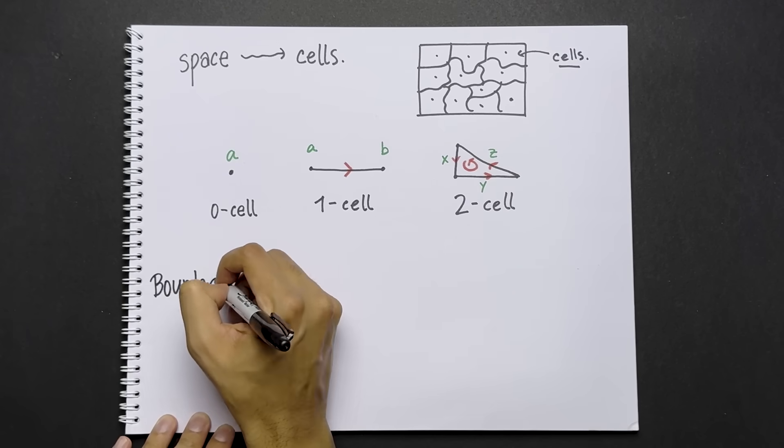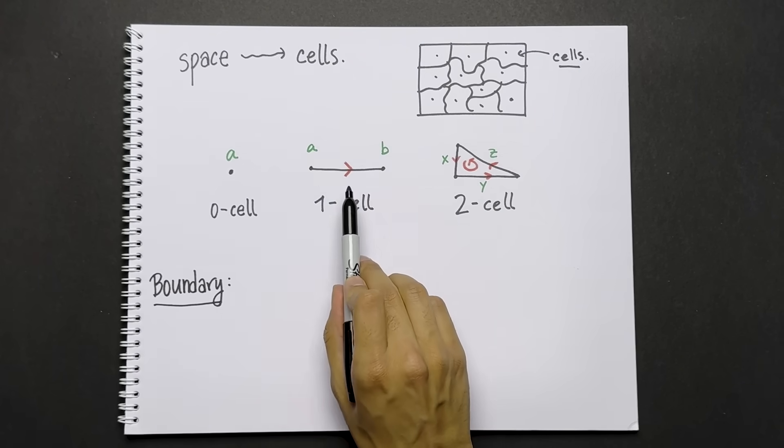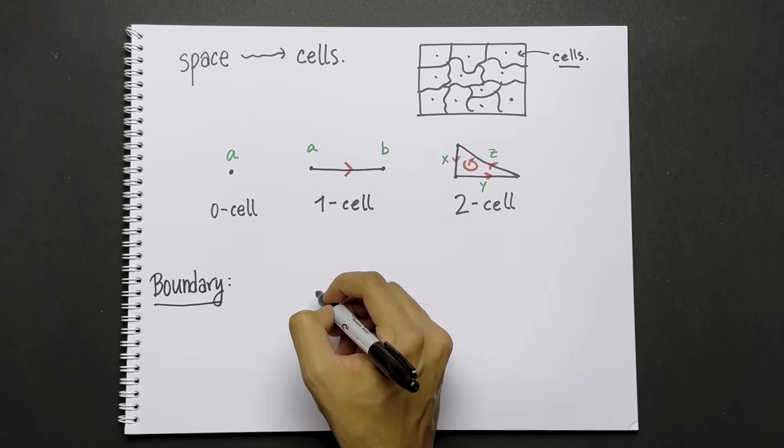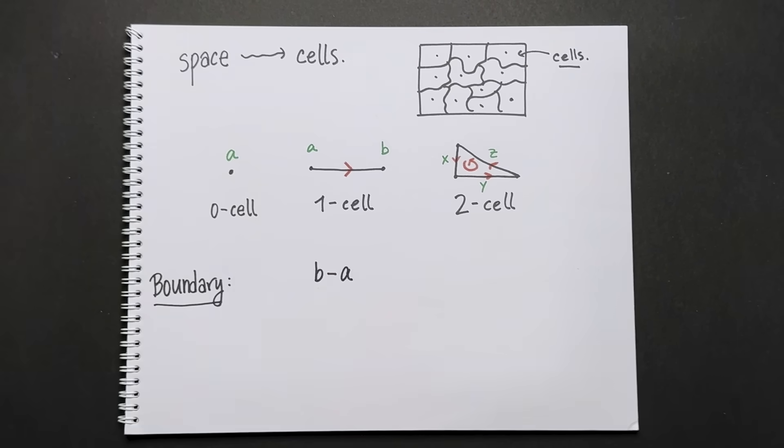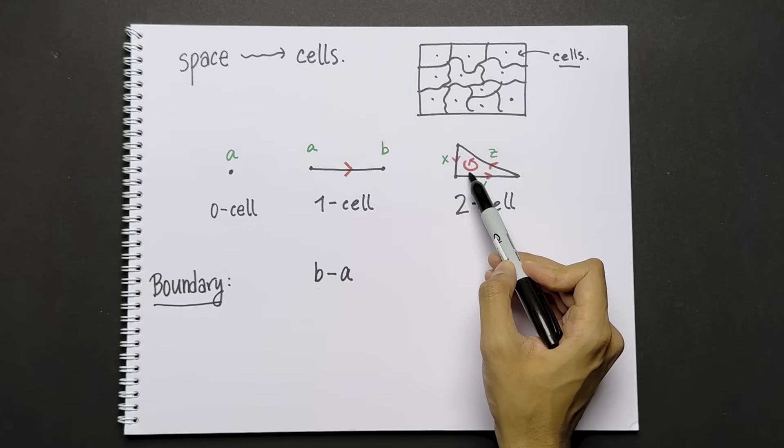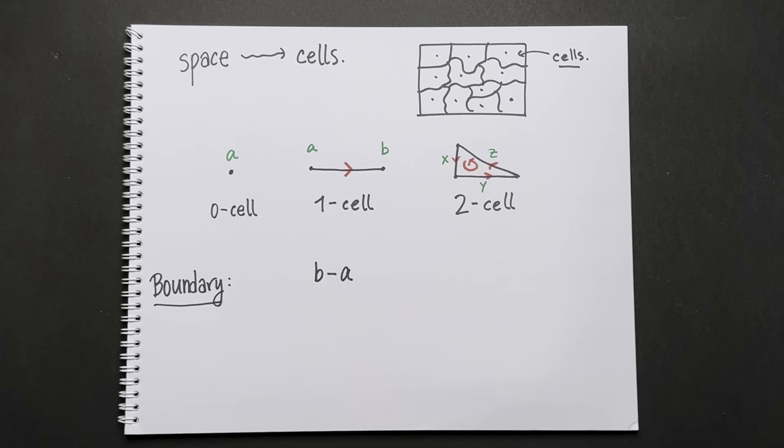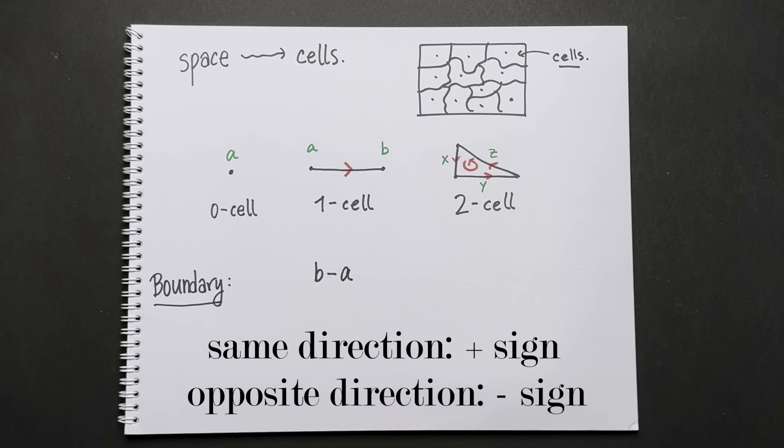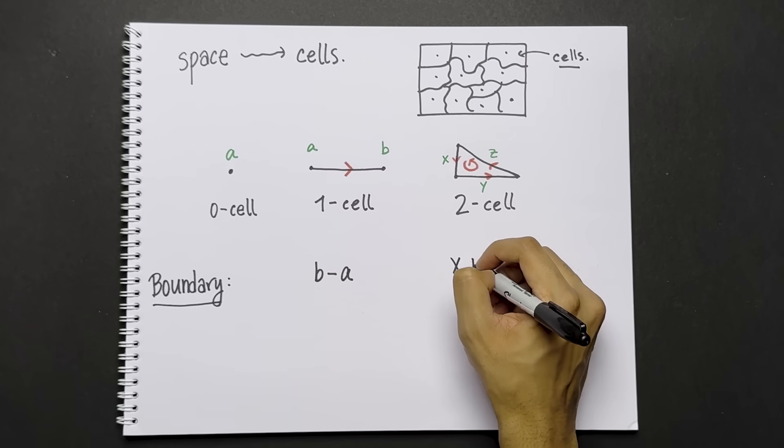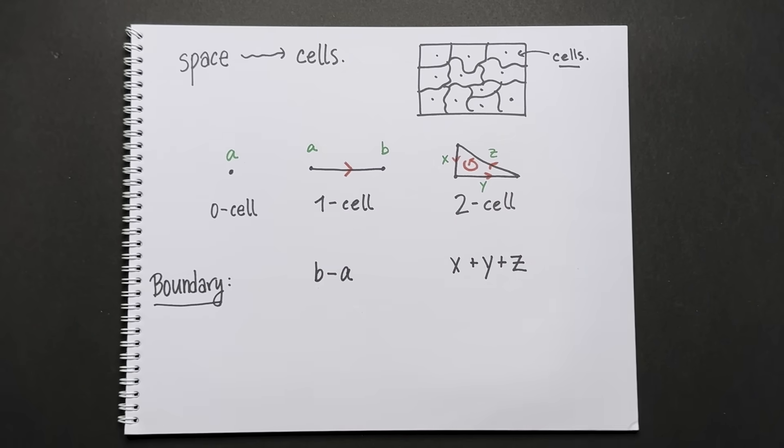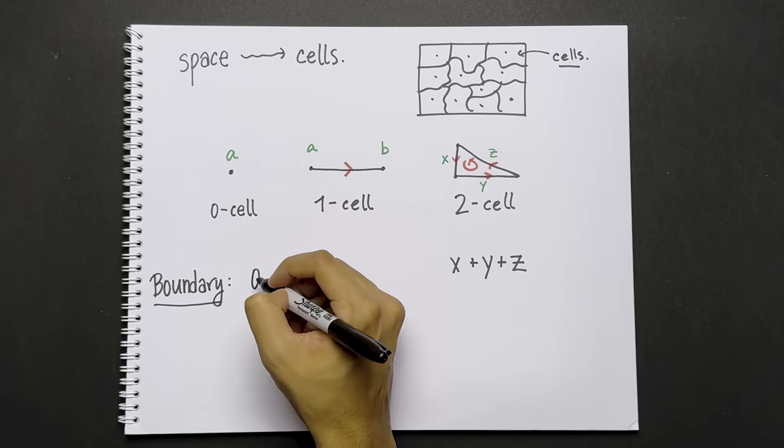Using these arrows, we can define the boundary of a cell. For example, the boundary of this one cell is the end point minus the start point, b minus a. For the two cell, we travel along the rotating arrow. If the orientation of that one cell goes in the same direction as the orientation of the two cell, we give it a plus sign. If it goes in the opposite direction, we give it a minus sign. So the boundary of the two cell is x plus y plus z. And the boundary of a zero cell is always zero, by convention.